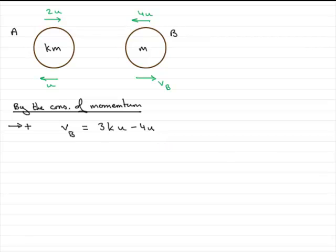Now what we're also told in this question is that K lies between 2 and 3. So since K lies between 2 and 3, what we've got to do is work out the minimum and maximum values that VB could lie between.